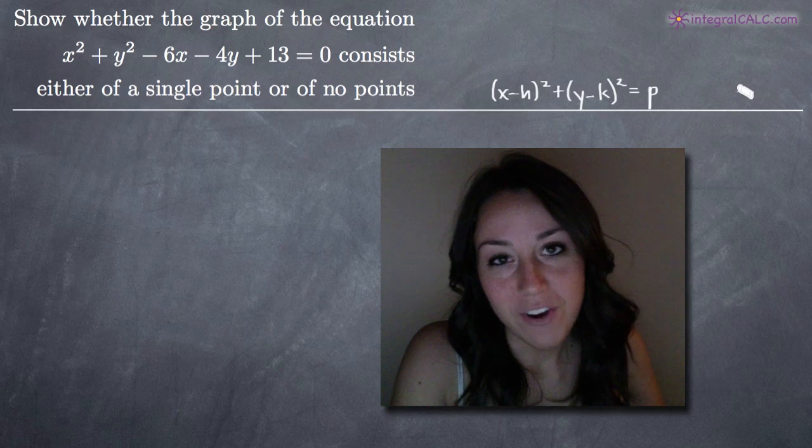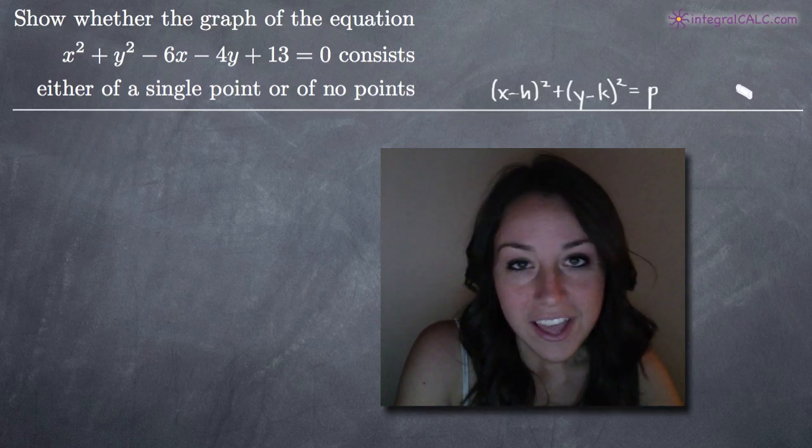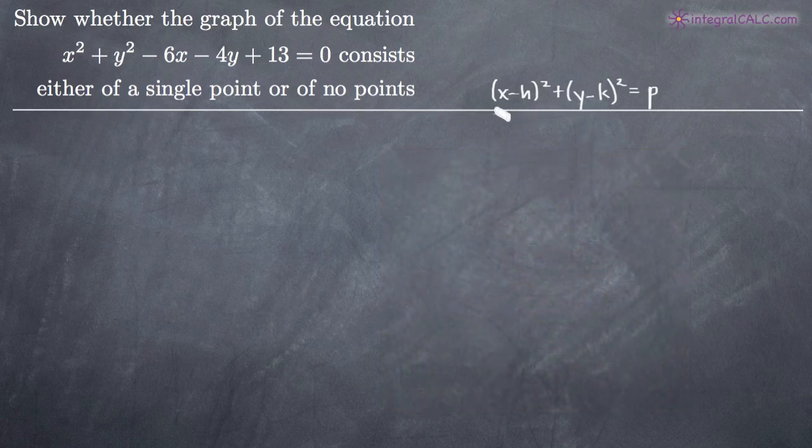Today we're going to be doing another problem out of our analytic geometry section. In this particular problem we've been asked to show whether the graph of the equation x squared plus y squared minus 6x minus 4y plus 13 equals zero consists of either a single point or of no points. So this graph is, they've already told us, either a single point or it's no points.